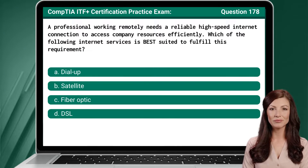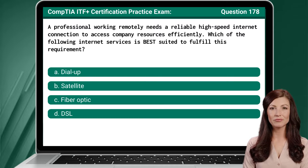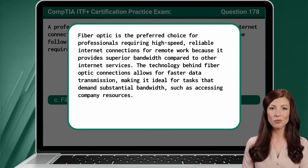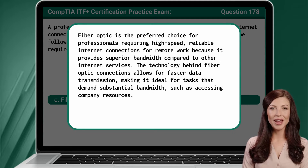Question 178. A professional working remotely needs a reliable high-speed internet connection to access company resources efficiently. Which of the following internet services is best suited to fulfill this requirement? The answer is C. Fiber Optic. Fiber Optic is the preferred choice for professionals requiring high-speed, reliable internet connections for remote work because it provides superior bandwidth compared to other internet services. The technology behind fiber optic connections allows for faster data transmission, making it ideal for tasks that demand substantial bandwidth, such as accessing company resources.